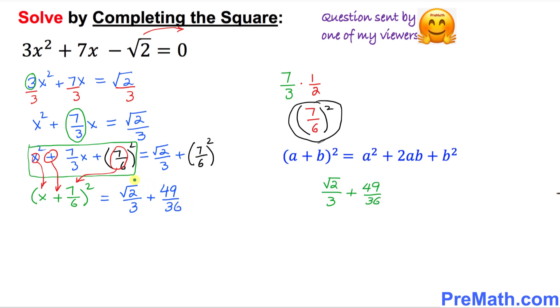And now let's just look at the right-hand side. Our denominators are 3 and 36. We can make 36 as a common denominator. If I multiply by 12 top and bottom of this one, that is going to give us (12√2)/36 + 49/36.